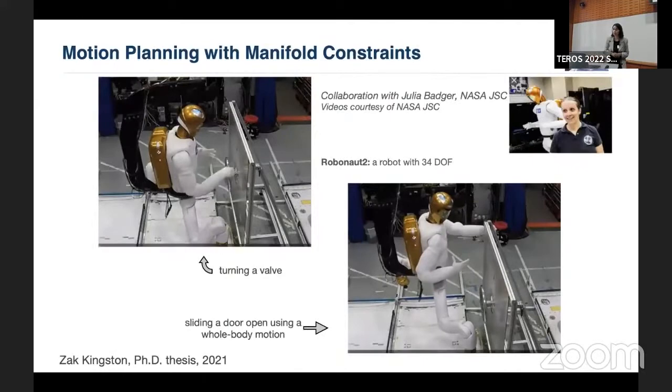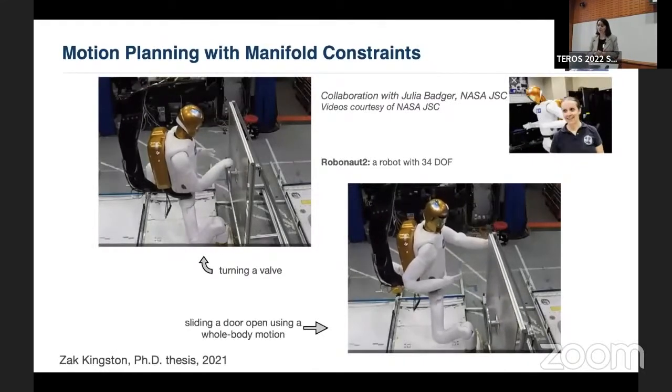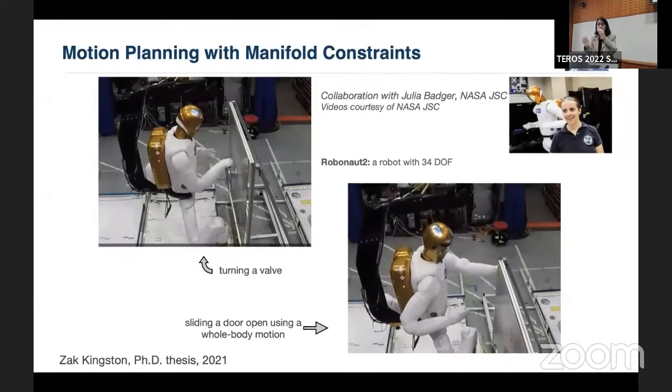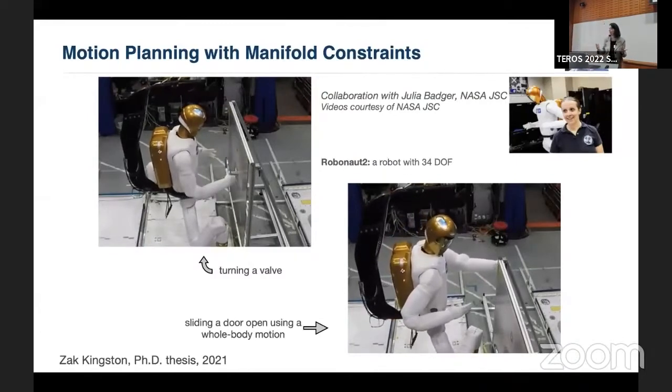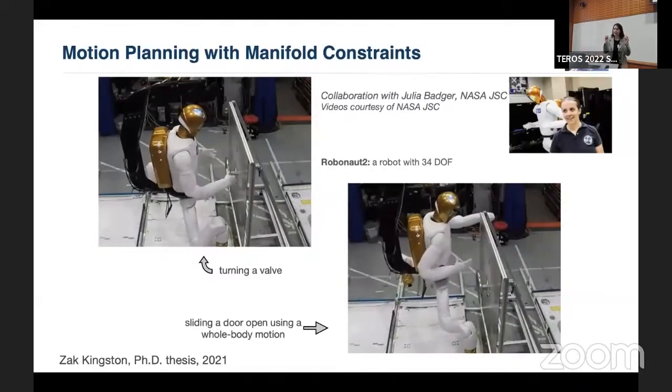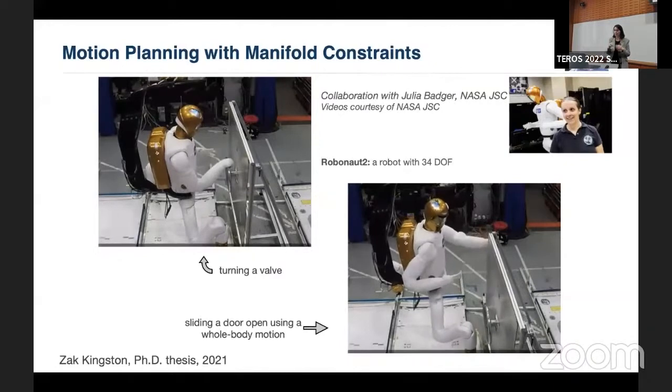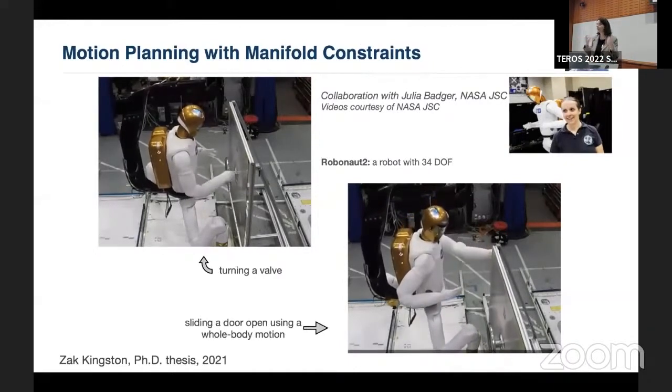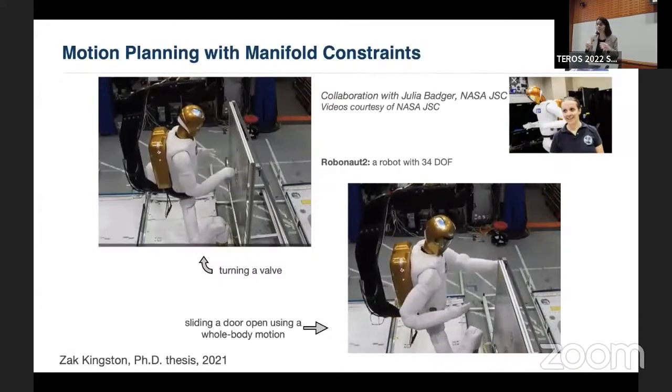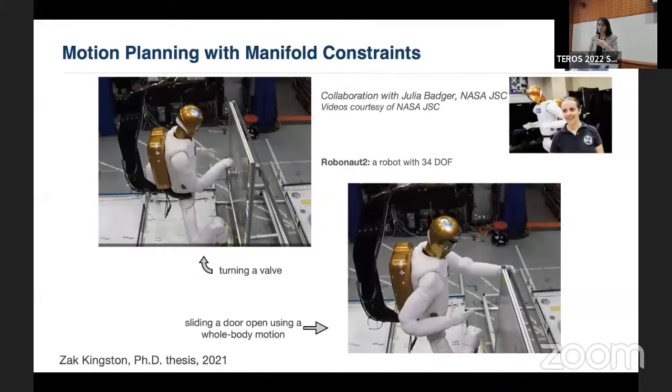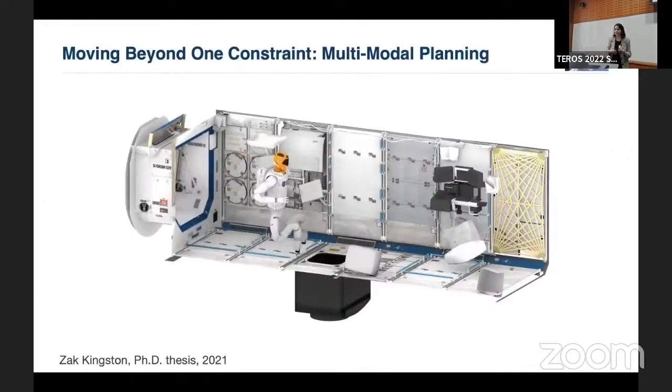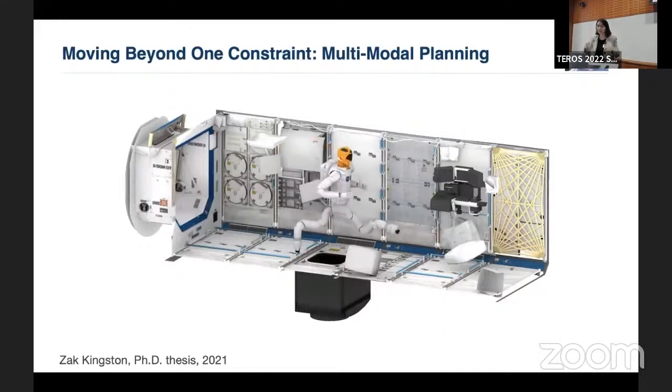And to finish, the third part that I wanted to discuss is motion planning with manifold constraints. So Zach Kingston finished his PhD on this problem. Inspired by the Robonaut problem. And you can see here the robot turning a valve and pushing a door open. This is planning for a high dimensional system, but with manifold constraints. And of course, there are many planners for this, if you look at the literature. But what Zach did is that instead of changing the planners to work with manifold constraints, he endowed the search space with operations that support what sampling based planners need. So you can take any sampling based planner and use it to plan with manifold constraints, allowing you to choose the right planner for the right job.